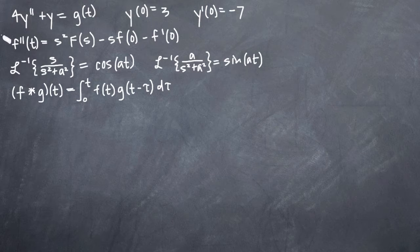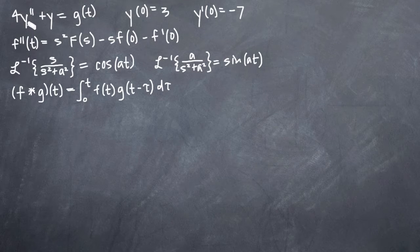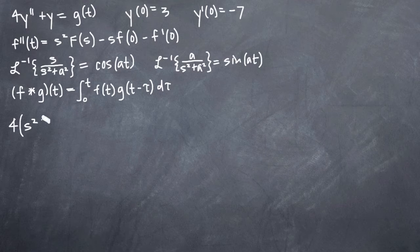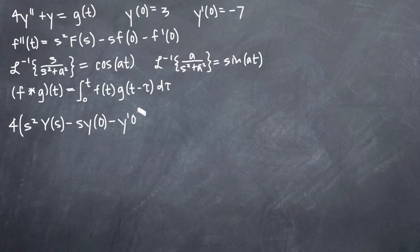We're going to do that by using the formula for the Laplace transform of y''. We'll be taking the Laplace transform of each of our terms in our original differential equation: 4y'', y, and g, one term at a time. For 4y'', we leave the 4 out in front, and the Laplace transform of y'' by our formula will be s squared times Y(s) minus s times y(0) minus y'(0).